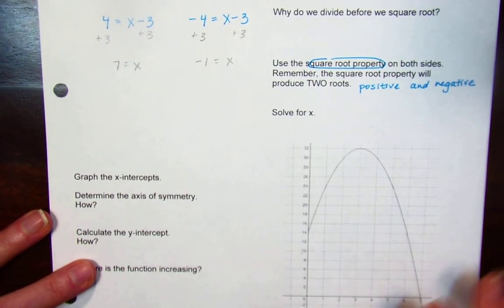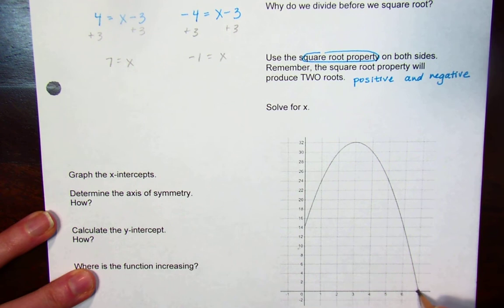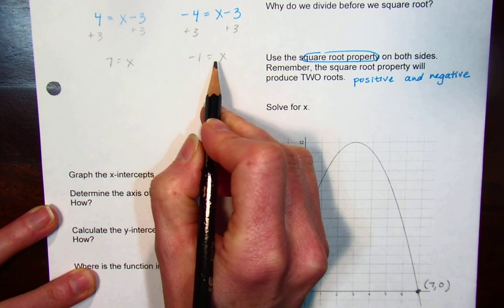It's saying x is equal to 7. Okay, yes, the object is going to land after 7 seconds. But then x is equal to negative 1.